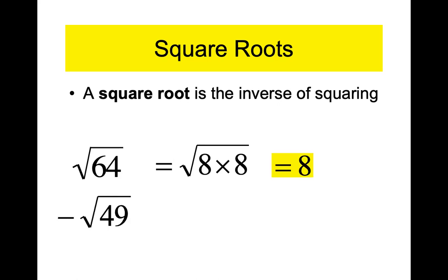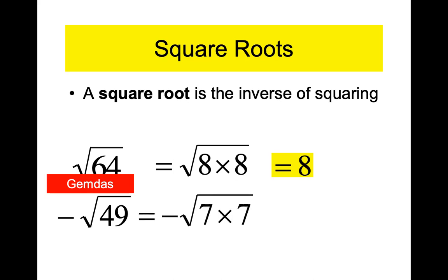Eighth grade — you get more complicated square roots than last year. What's the answer? Negative. There are two things going on here: there's a square root and there's also a negative. We could call that subtraction — we're subtracting a square root. What's the square root of 49? It's seven, so this is subtract seven — in other words, negative seven. The negative is on the outside of the radical symbol, so you get an answer of negative seven.